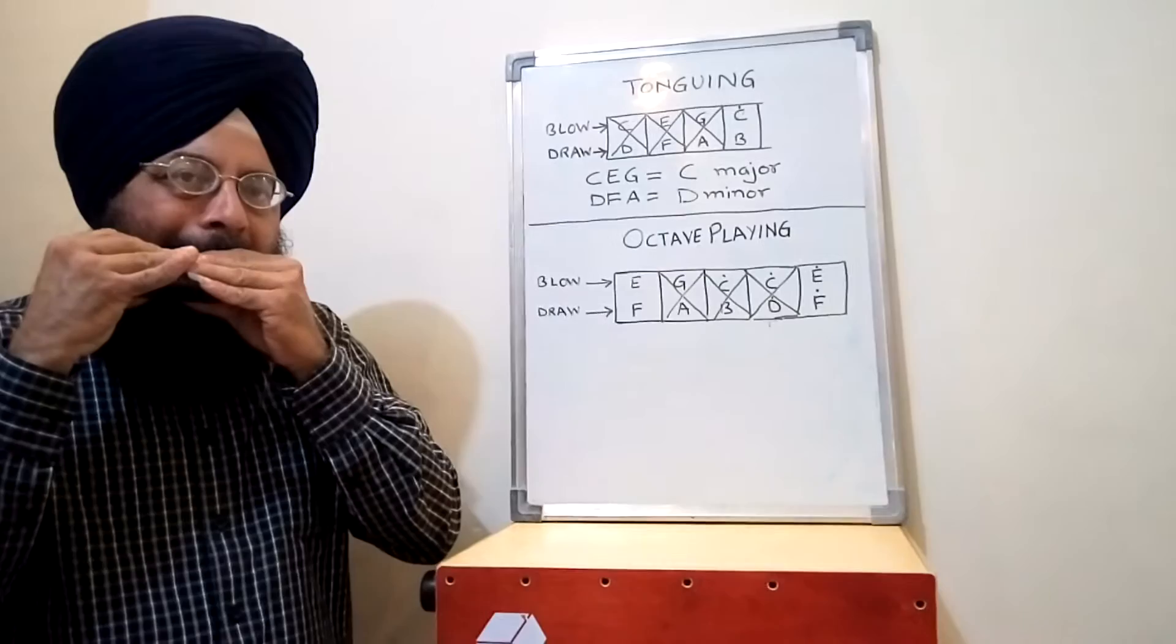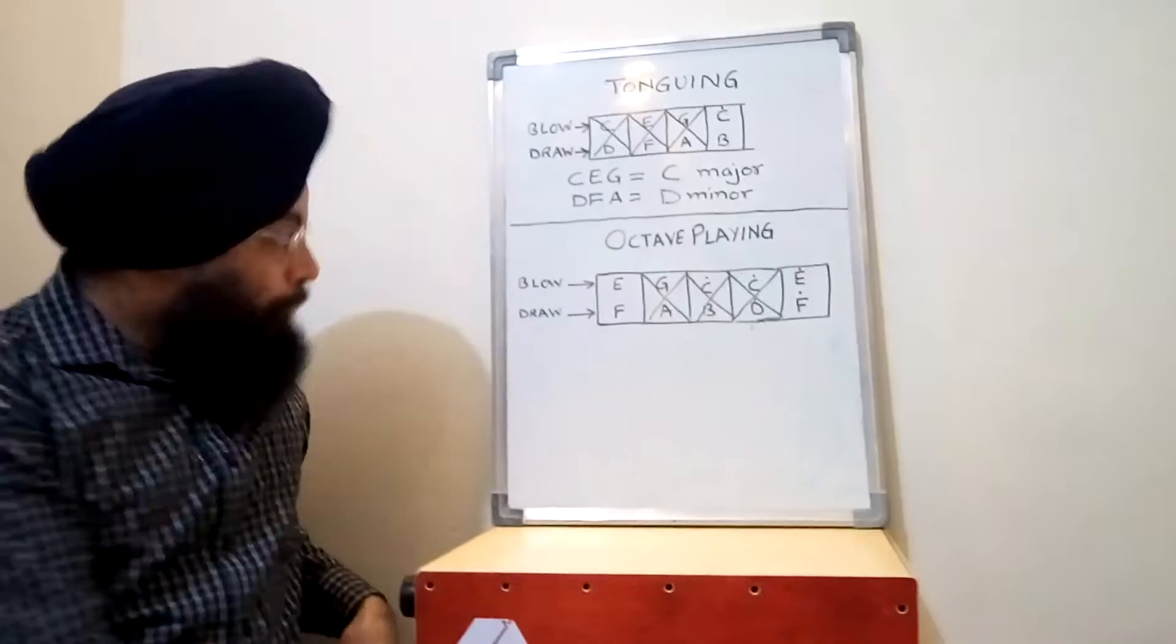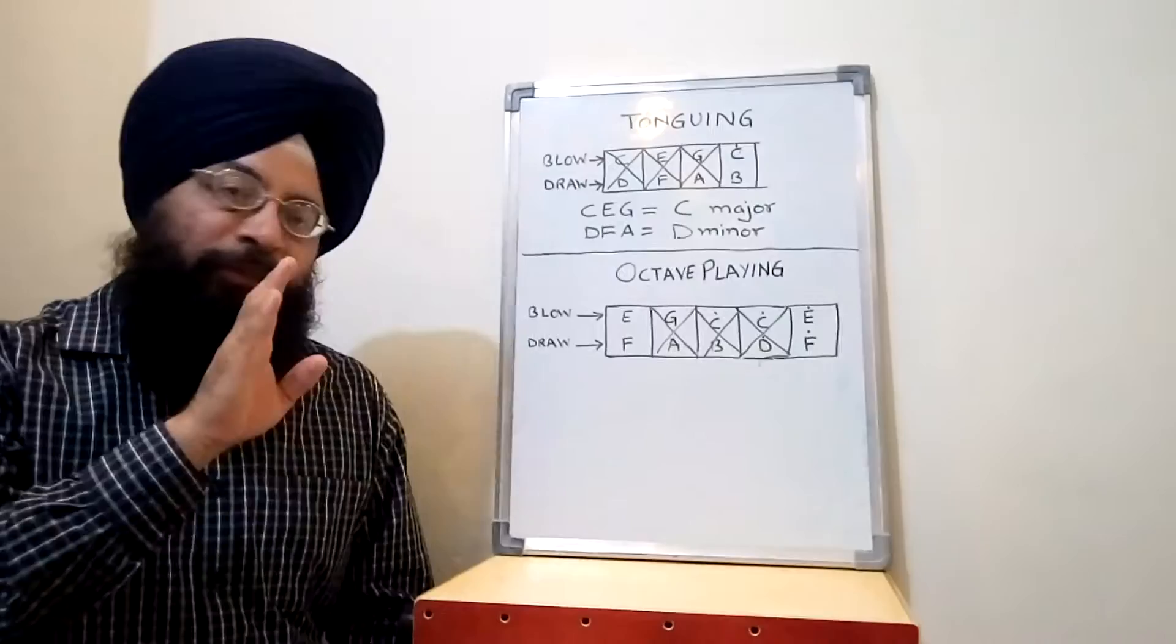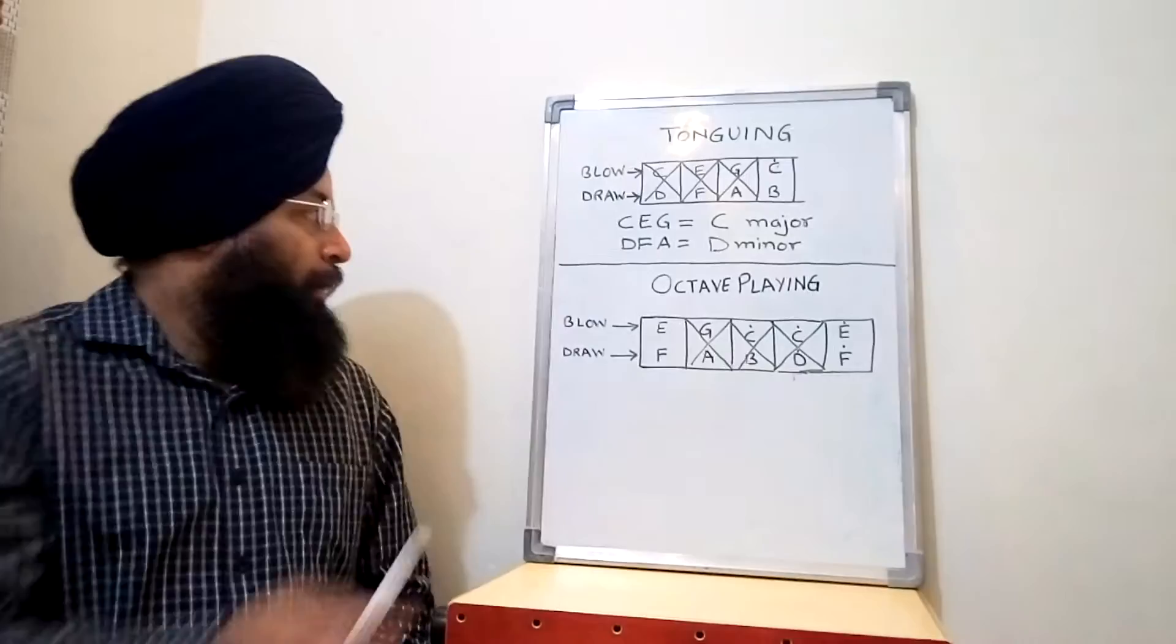So this is an example of tonguing where you block these extreme left three holes and you open the extreme right hole. You spread your mouth wide open and with the help of tongue by placing the tongue on the left side, you just play the chords along the song. Now let's discuss octave playing.